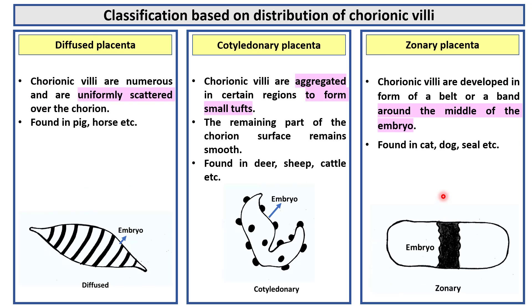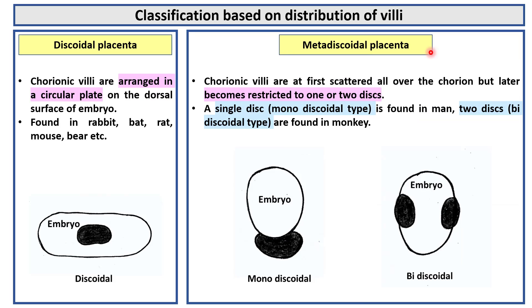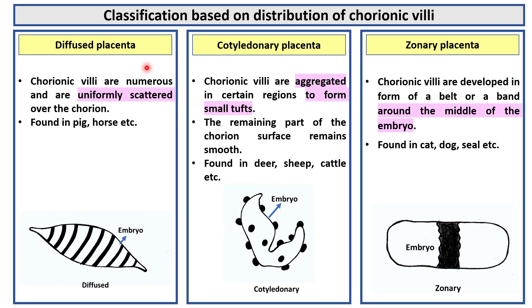Based on distribution of chorionic villi, there are five types of placenta: diffused placenta, cotyledonary placenta, zonary placenta, discoidal placenta, and metadiscoidal placenta. In diffused placenta, chorionic villi are numerous and are uniformly scattered over the chorion. This is found in pig, horse, etc.